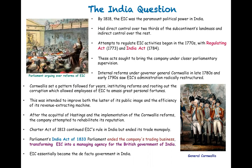A turning point in the history of the East India Company took place in 1830 with the passing of the Charter Act of that year, which effectively ended the EIC's trade monopoly, except in China. Some 20 years later, the India Act of 1833 would put an end effectively to the East India Company's trading business and transform it essentially into a managing agency for the British government in India, making it the de facto government in India.